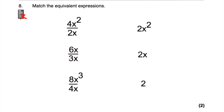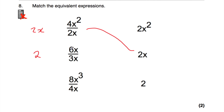Question number 8: match the equivalent expressions. First, 4x² divided by 2x — 4 divided by 2 is 2, and x² divided by x is x, giving 2x. Next, 6x divided by 3x — 6 divided by 3 is 2, x divided by x cancels to 1, giving 2. Finally, 8x³ divided by 4x — 8 divided by 4 is 2, and x³ divided by x is x², giving 2x².